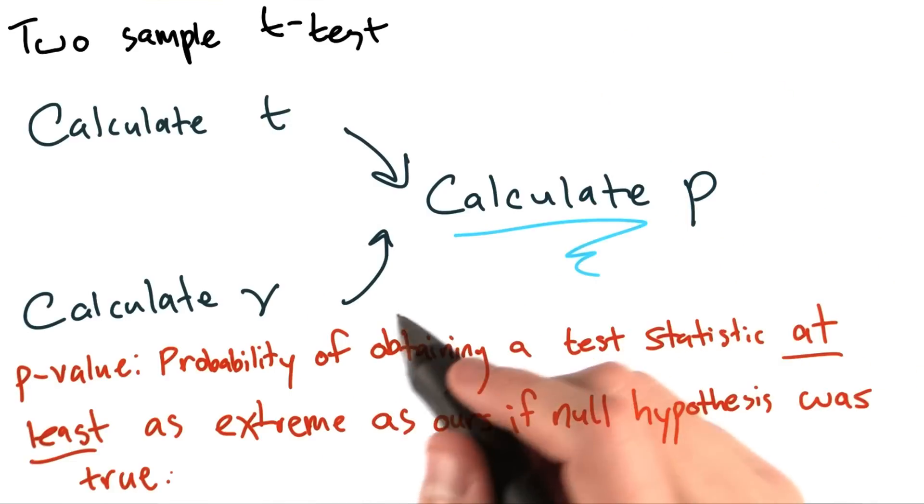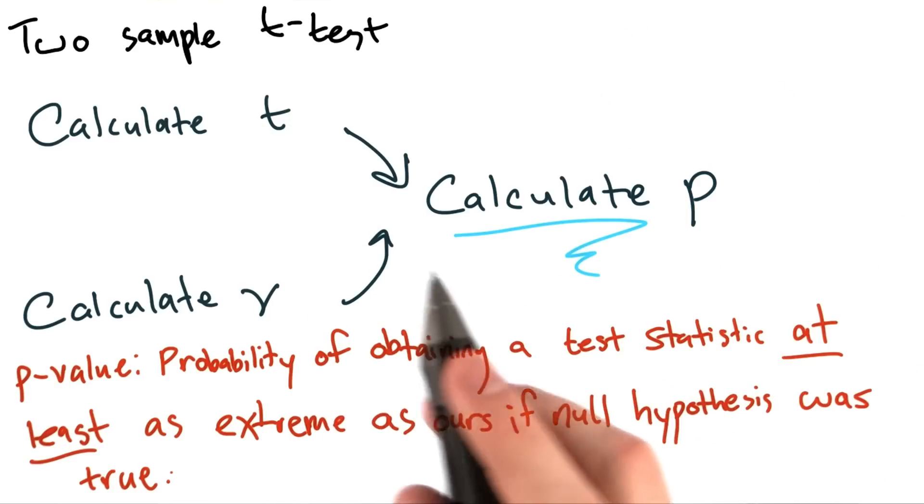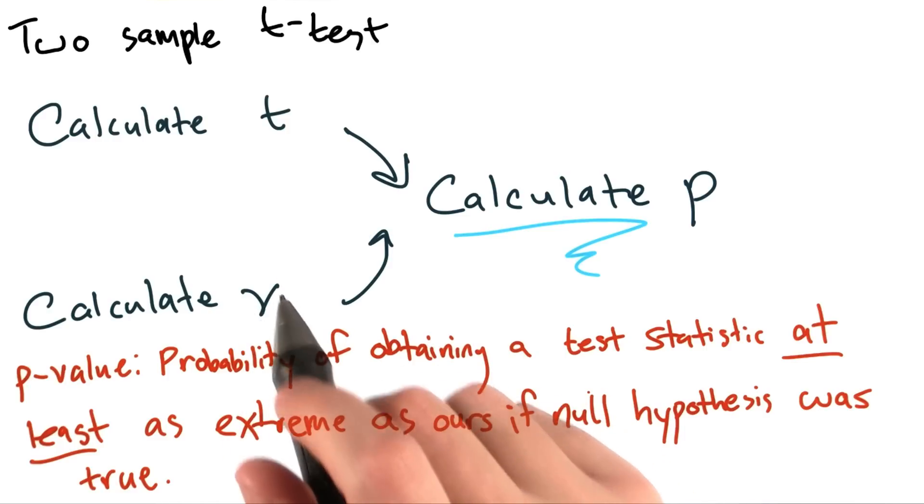If the p-value was 0.05, this would mean that even if there's no difference between left-handed and right-handed batters, since that's our null hypothesis, so even if this was true, we would see a value of t equal or greater to the one that we saw 5% of the time.